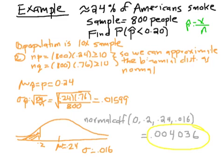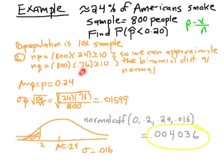We have two rules of thumb to check. The first rule: is your population 10 times your sample size? Clearly, our sample size is 800, and our population is the entire United States — way more than 800 times 10. Can we approximate this binomial distribution as a normal distribution? We check: is np and nq greater than or equal to 10? Clearly, 800 times p, which is 0.24, is greater than 10. And even more clearly, 800 times q — remember, q is the probability of failure, or in this case not smoking — they're both bigger than 10. So we can approximate the binomial distribution as a normal distribution, which is why we end up using normal CDF.